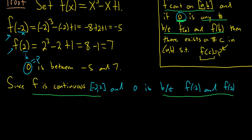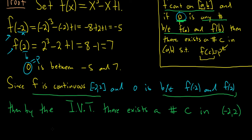Then by the Intermediate Value Theorem, there exists a number c in the interval between negative 2 and 2, such that f of c is equal to 0, because p is equal to 0.